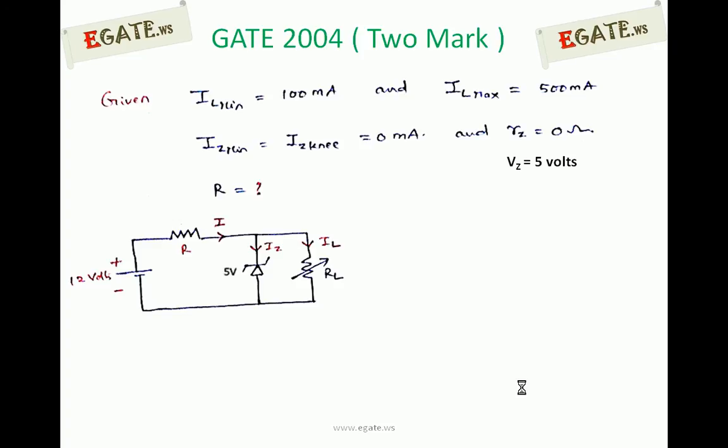The given information is load current is varying from 100 mA to 500 mA. So IL minimum is 100 mA, maximum load current is 500 mA.